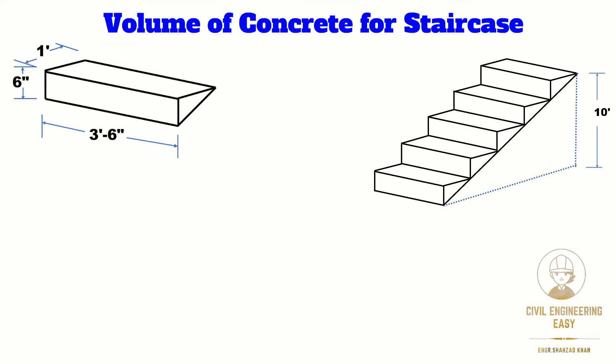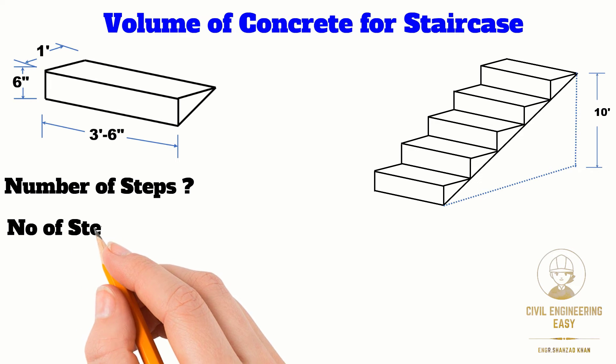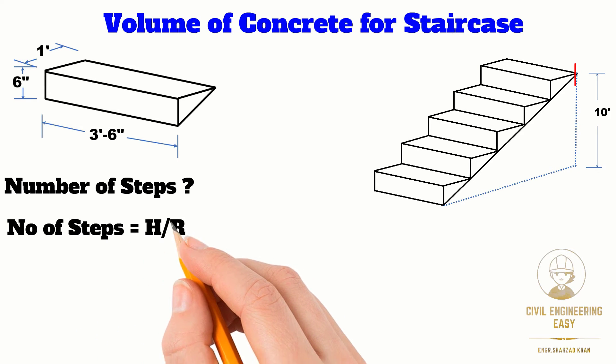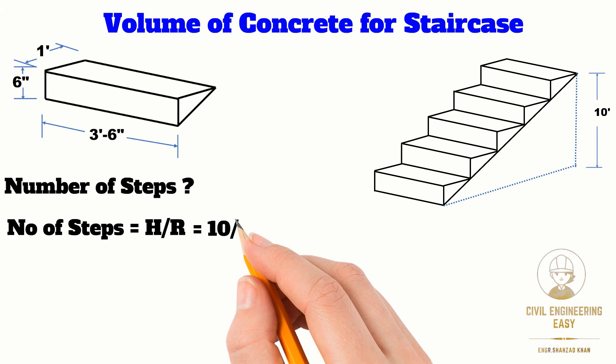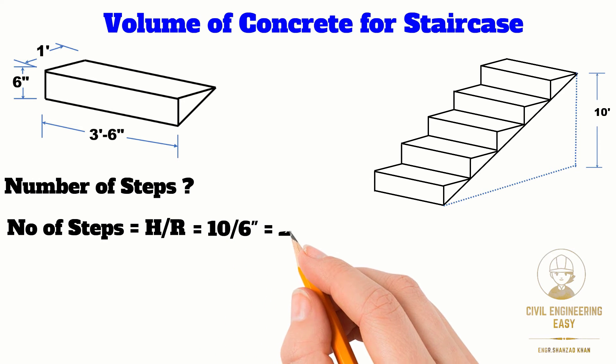Let's start the calculations. First, we will find the number of steps. The formula is: number of steps equals the height of the staircase divided by the height of the riser. The height of the staircase is 10 feet and the height of the riser is 6 inches, so by calculation we get 20 steps.